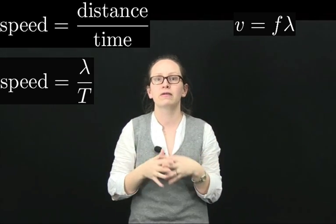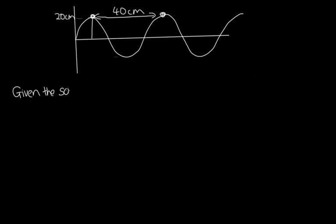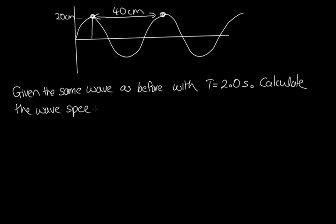Let's do an example now where we'll work out the speed of a wave. So the question is, given the same wave as before with a period of two seconds, calculate the wave speed. So in order to calculate this, we'll need to use v is equal to f lambda. So we know that frequency is equal to the inverse of the period, so this is the wavelength over the period. The wavelength is the 40 centimeters, so 0.40 meters, and this is divided by 2.0. So we get 0.20 meters per second, or 20 centimeters per second.